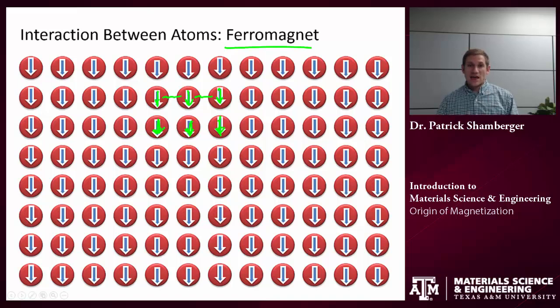Now if I take any ferromagnet and I start heating it up, at some point I'm going to put enough thermal energy in there that that thermal energy will overweigh the benefit I get from the atoms, the magnetic moments on the atoms lining up. So I would see a curve that looks something like this. The saturation magnetization, so the total magnetic moment that I could get in that material, will decrease as I increase the temperature.